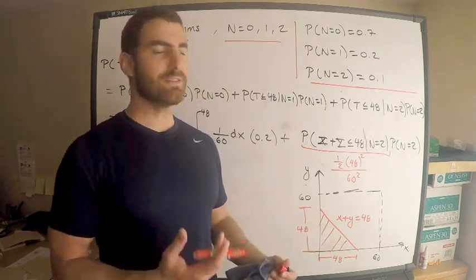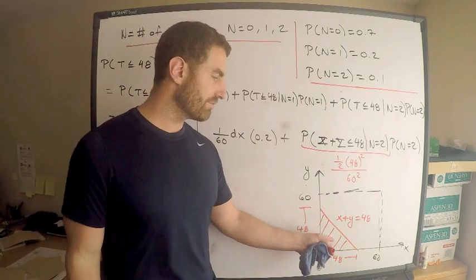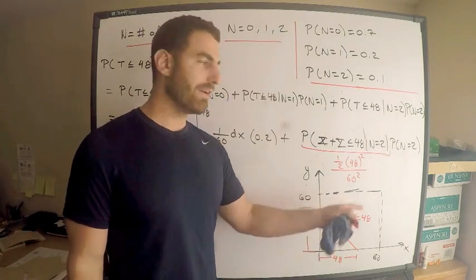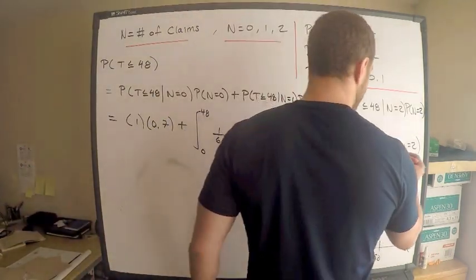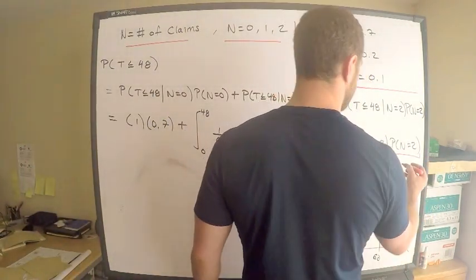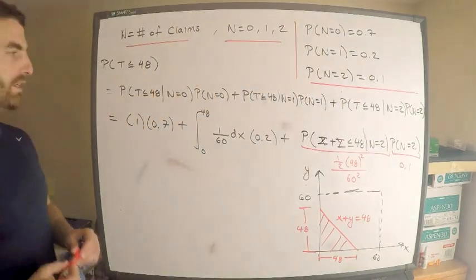I mean, geometry. Easy geometry, right? So this is one half times the length times the width, which is also 48 divided by the area of the square. Area of the triangle divided by the area of the square. It's exactly, I mean, this should make sense. This intuitively makes sense. I want the probability of laying in this region. It's just the area of that divided by the area of the square times the probability N is 2. What's the probability N is 2? This is 0.1. We're good to go.